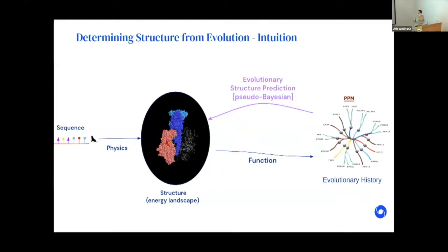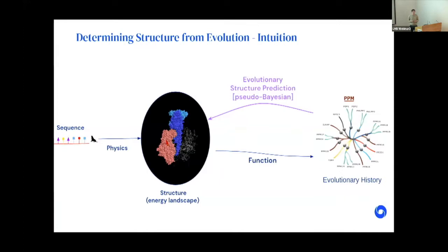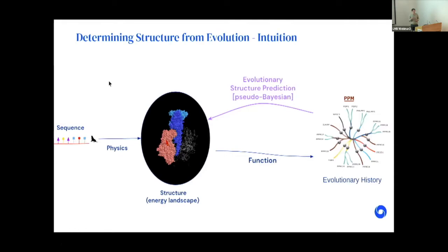How AlphaFold works — as a physicist, I love the left-hand side of this diagram: the Anfinsen and Levinthal framework, where the amino acid sequence through the power of physics — Newtonian and quantum mechanics — gives us an energy landscape, of which the structure deposited in the PDB is the approximate free energy minima, except for all the exceptions.